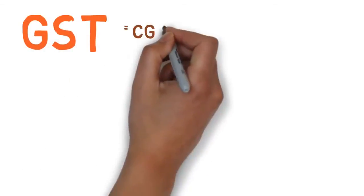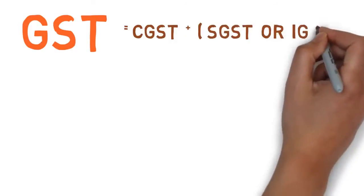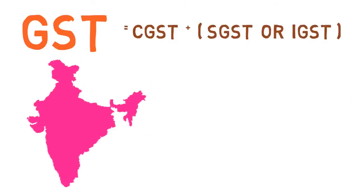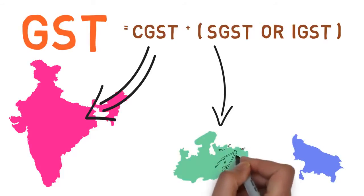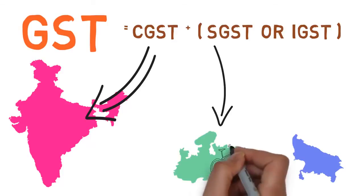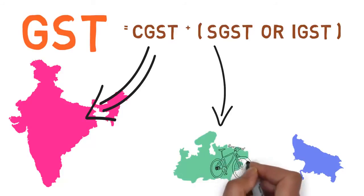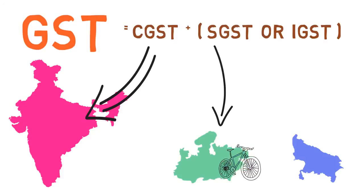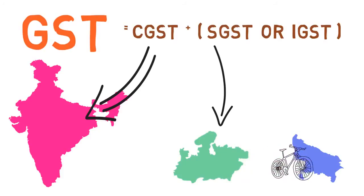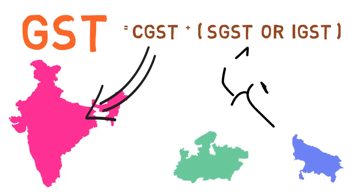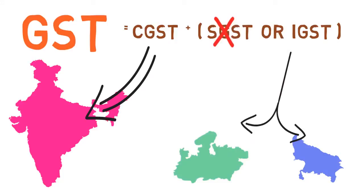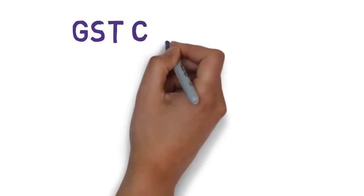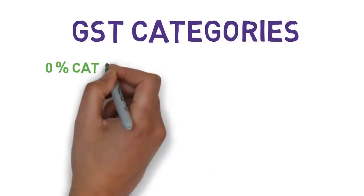GST is a combination of CGST and SGST, or IGST. CGST is Central GST, which is paid to the central government. SGST is State GST, which is paid to the state government. IGST is Integrated GST, which applies when goods and services move interstate. For example, if a product is manufactured in Madhya Pradesh and sold in another state, IGST is distributed between both states; in this case SGST will not be collected.